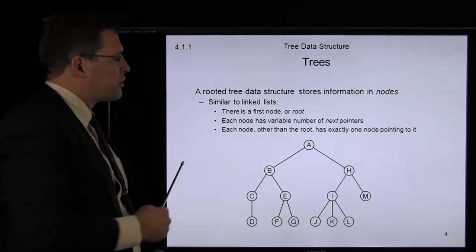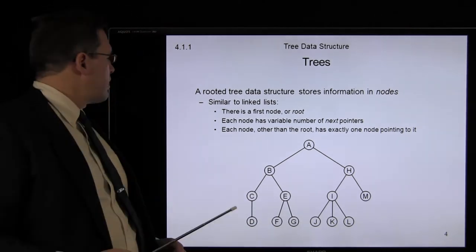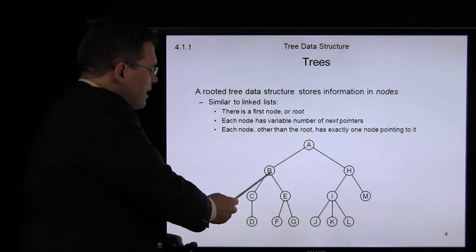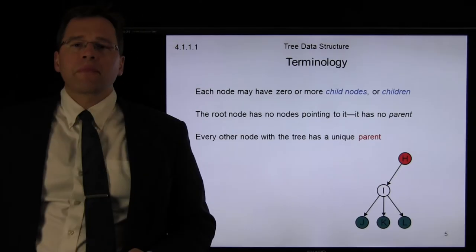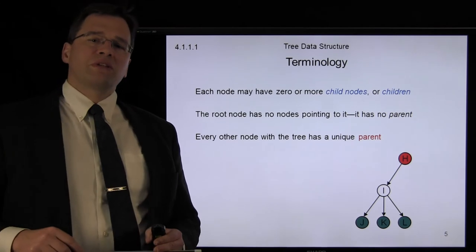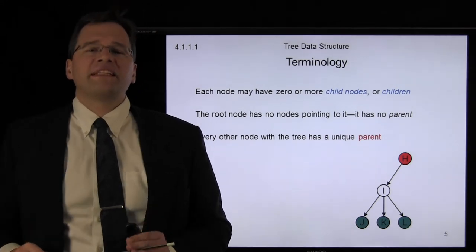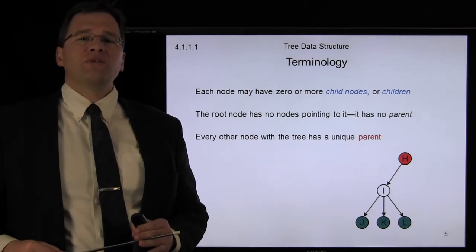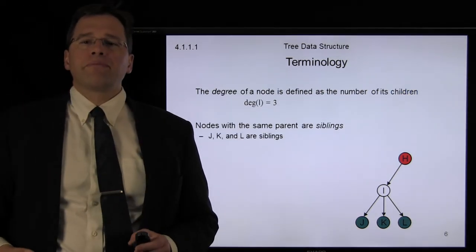The root node here has two next pointers pointing at two other nodes. Node I is pointing at three nodes. You'll notice that every single node within a tree other than the root node has exactly one node that's pointing to it. H is pointing to I, and I is pointing to J. So, every single node may have zero or more children, or child nodes. The root node has no node pointing to it — that is, it has no parent. Every other node will have exactly one unique parent. Here, we have node I; its parent is node H, and it has three children: J, K, and L.